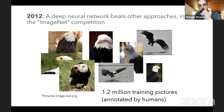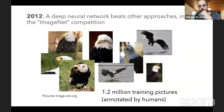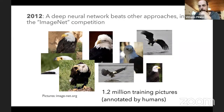The transition from neural networks being of purely academic interest to being groundbreaking happened very quickly. A widely recognized milestone was the 2012 ImageNet competition, where different algorithms competed at image recognition using one million human-annotated images. In 2012, for the first time a neural network won this competition, and from that day on there was no coming back.